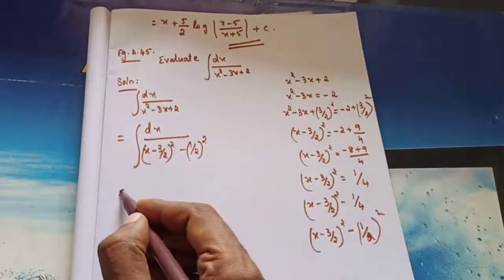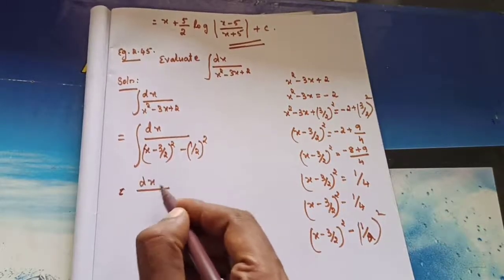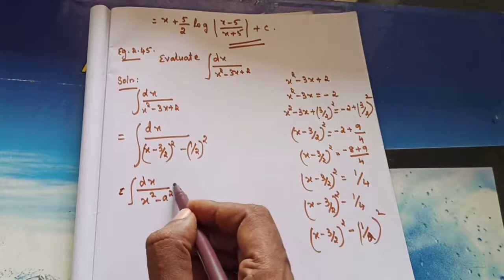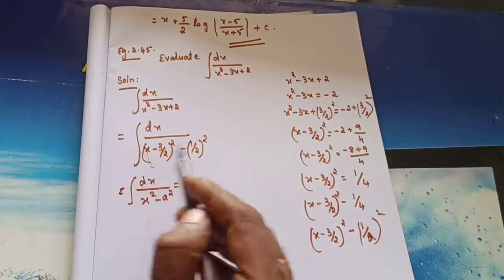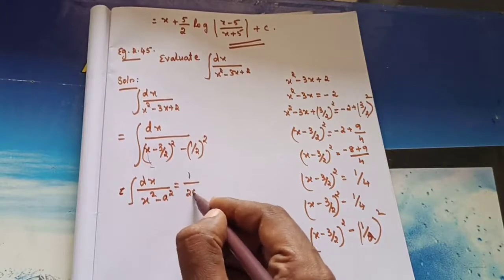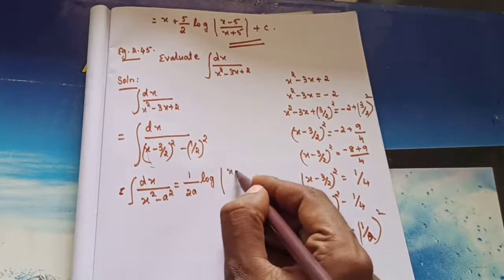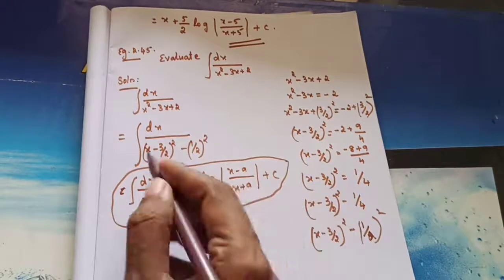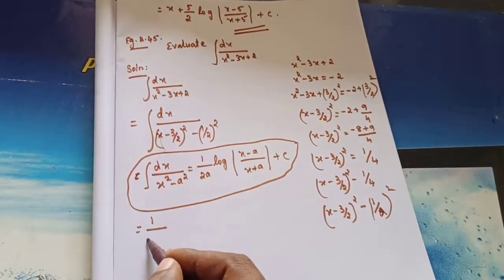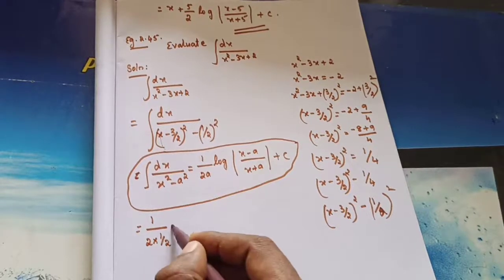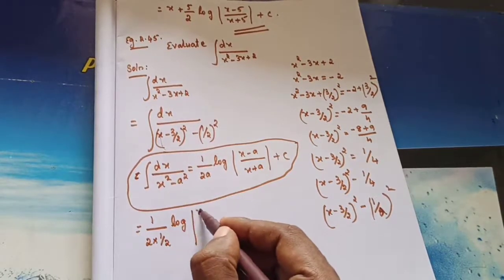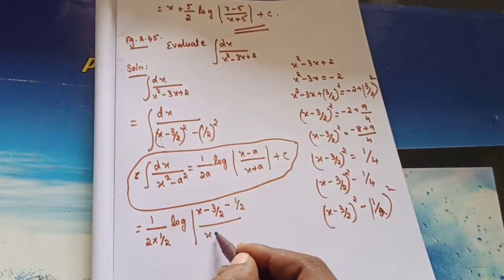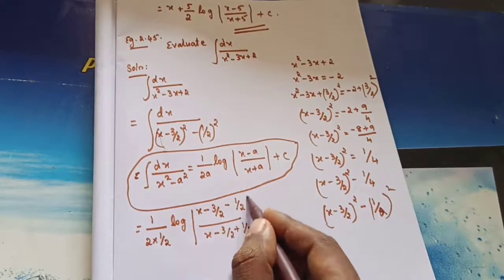So the formula dx/(x² minus a²) equals 1/(2a) times log|(x minus a)/(x plus a)| plus C. Here in place of x we have (x minus 3/2), and a equals 1/2. Substituting: 1/(2 × 1/2) times log|(x minus 3/2 minus 1/2) divided by (x minus 3/2 plus 1/2)| plus C.